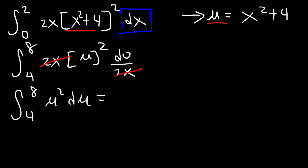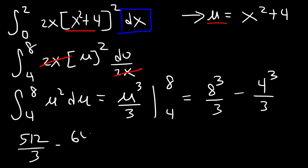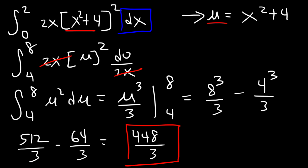The antiderivative of u squared is u to the third over 3, evaluated from 4 to 8. Plugging in 8 gives 8 to the third over 3, minus 4 to the third over 3. 8 cubed is 8 times 8 times 8, which is 512. 4 to the third power is 64, and 512 minus 64 is 448, which is not divisible by 3. So the final answer is 448 over 3.